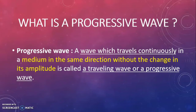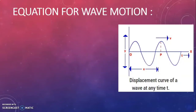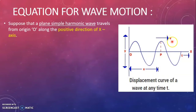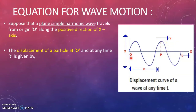For the equation of wave motion, consider a plain simple harmonic wave which travels from origin O along the positive direction of the x-axis. Here the y-axis represents displacement and the x-axis represents time. This is the direction of wave propagation and v is the wave velocity. The displacement of a particle at O at any time t is given by y = a sin(ωt).